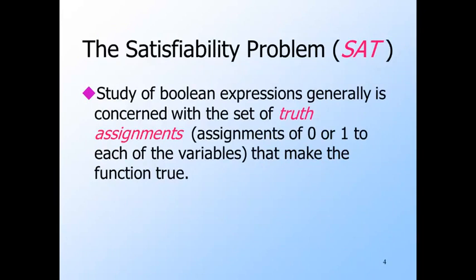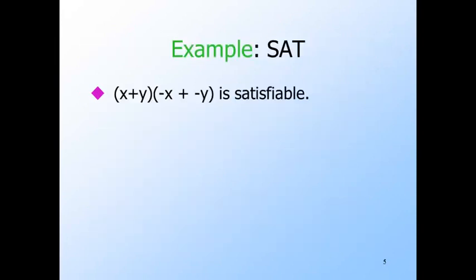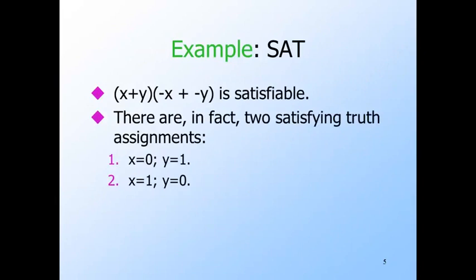A truth assignment is an assignment of zero or one — that is, false or true — to each of the variables of a Boolean expression. The key question about Boolean expressions is which truth assignments give them the value true. But for our NP-complete problem, we need only this very simple question: given a Boolean expression, does there exist at least one truth assignment for which the value of the expression is true? So this expression is satisfiable. There are in fact two satisfying assignments — those that make one of x and y true and the other false. But the expression x AND NOT x is not satisfiable.